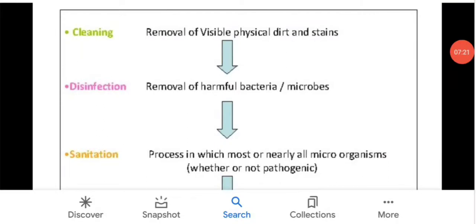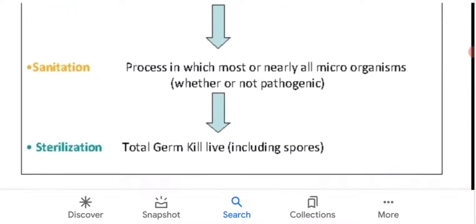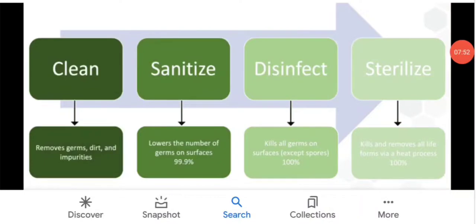What are the levels of cleaning? The first is removal of visible physical dirt or stains. Disinfection means removal of harmful bacteria or microbes. Sanitization is a process in which most or nearly all microorganisms, whether or not pathogenic, are removed. Sterilization is total germ kill, including spores — the best method. Cleaning removes germs, dirt, and impurities. Sanitization lowers the number of germs on the surface by 99.9%. Disinfection cleans all germs on the surface except spores. Sterilization kills and removes all kinds of microorganisms through heat processes with 100% removal. So sterilization is the best method if you want a completely microorganism-free object.